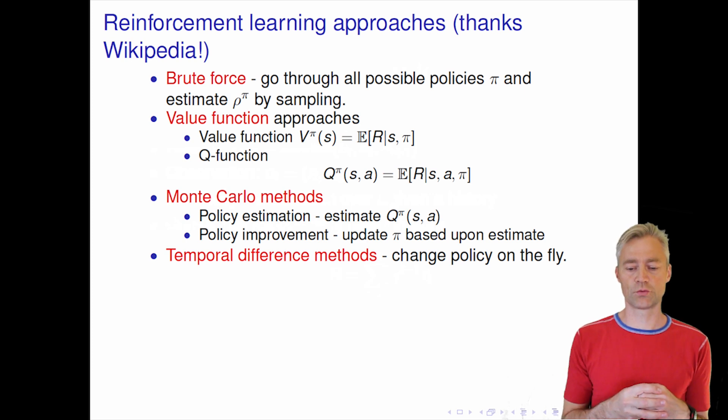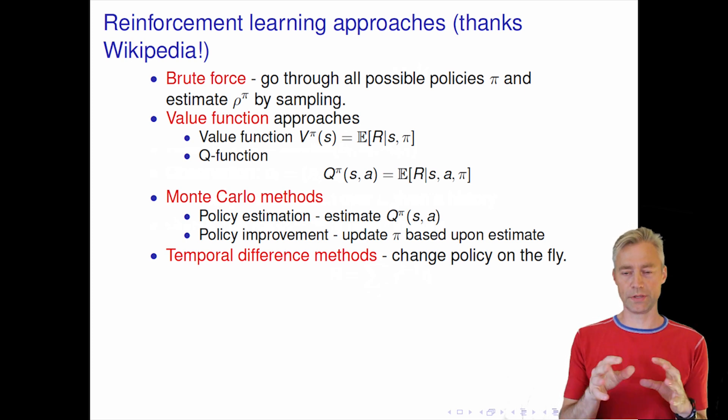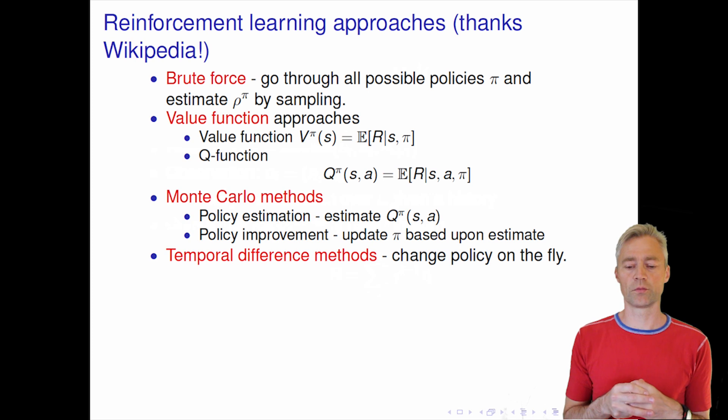Then there's temporal difference methods and they build on the same Q-function formulation. But they argue that it's very inefficient to actually take the first step where you do the policy estimation because you might use a lot of computer time to estimate the Q for very inefficient policy.